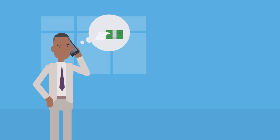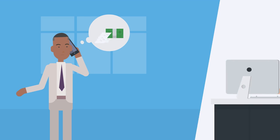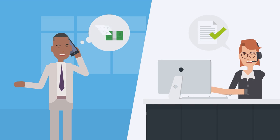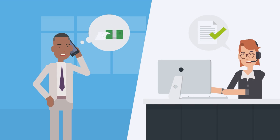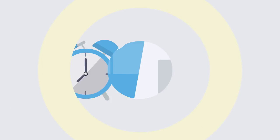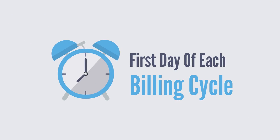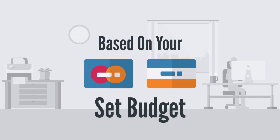Your Google Ads budget can be increased or decreased simply by calling or emailing your ads rep. On the first day of each new billing cycle, your account will automatically resume based on your set budget.